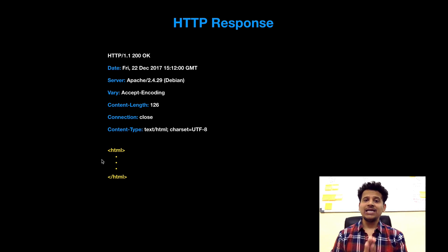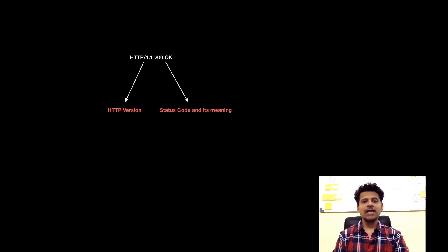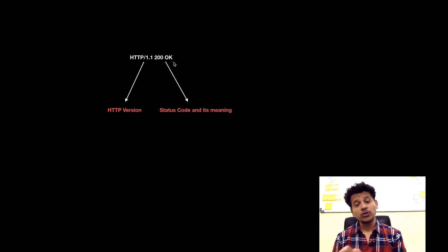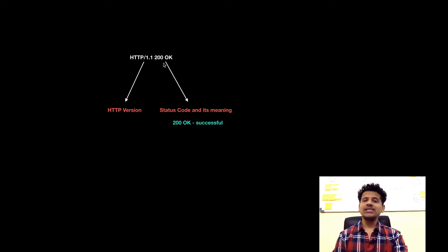Now let's analyze this HTTP response line by line. First there is HTTP 1.1 200 OK. As we saw in the last video, the browser was communicating on HTTP 1.1 version, and the same has been sent by the web server. After that there is 200 OK — 200 is a status code and OK is that status code's meaning. 200 OK means the request has been successful.